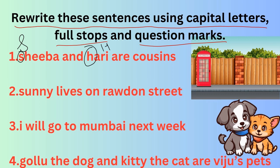Second: 'Sunny lives on Rodden Street.' Sunny is the name of a person, so capital S. Rodden Street is the name of a particular street, so Rodden's R should also be in capitals. 'Sunny lives on Rodden Street.' Full stop, because the sentence is complete.